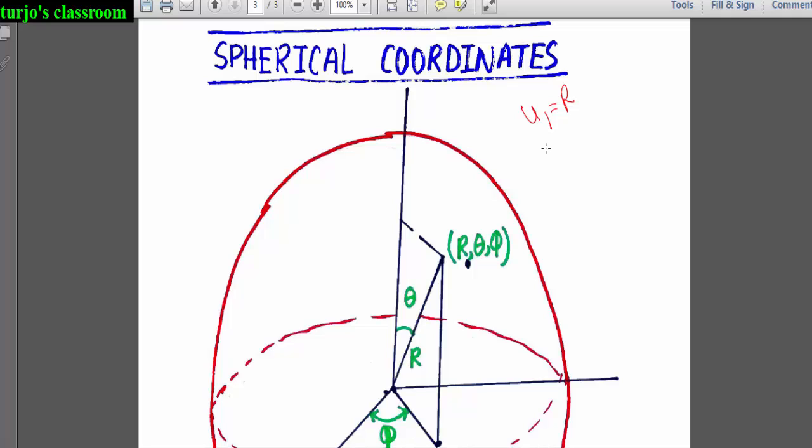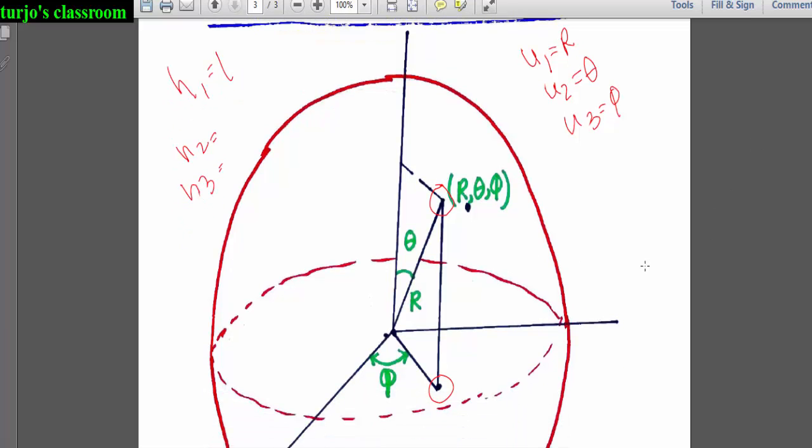For spherical coordinate system, the space coordinates are r, theta, and phi. Here h1 will be 1 as u1 is r, that's length, but we have to figure out h2 and h3. Look, that is our point, and r is the distance of this point from the origin. This angle is theta, and this is the orthogonal projection of our point on the xy plane.